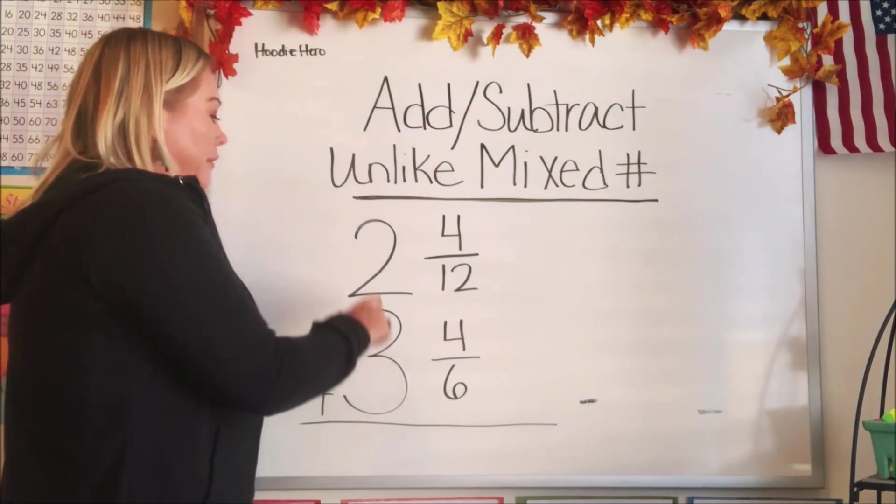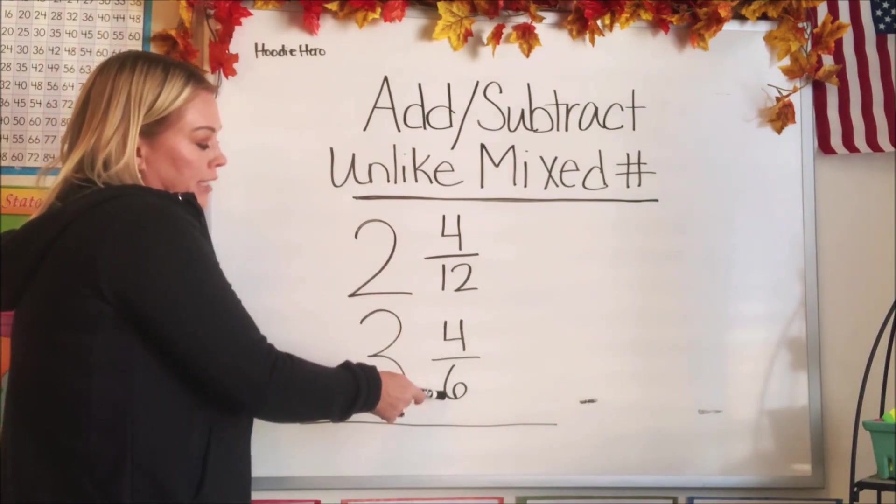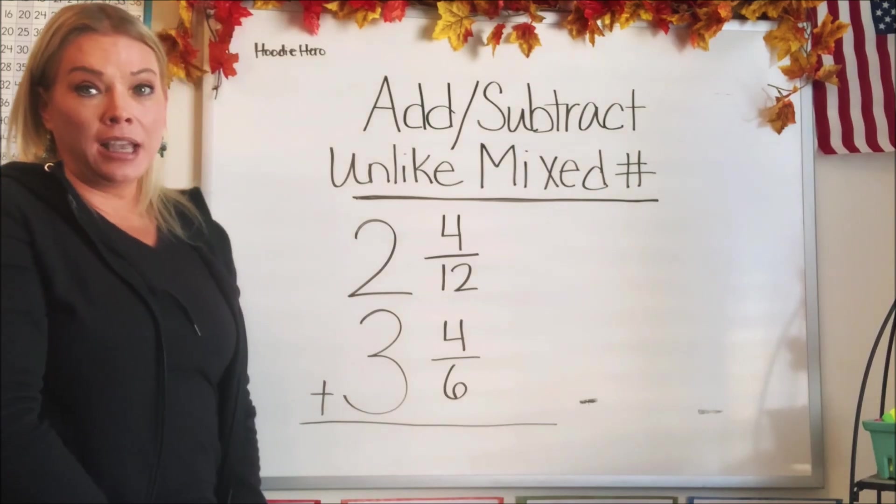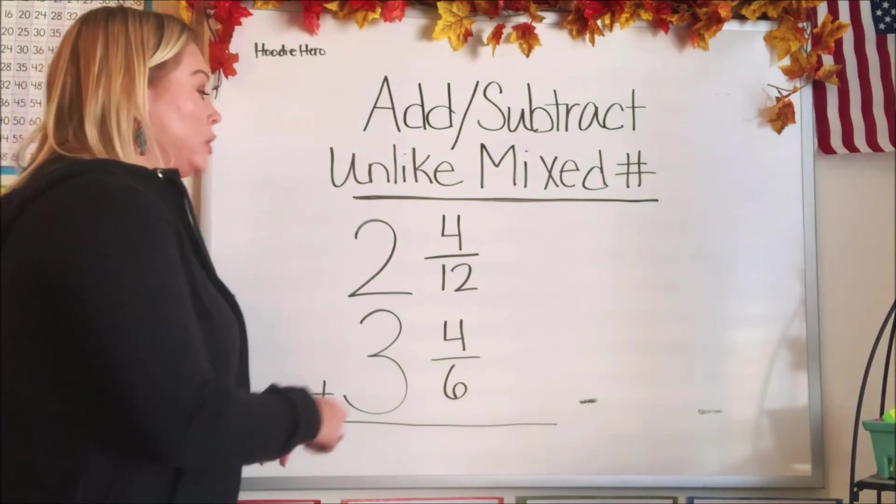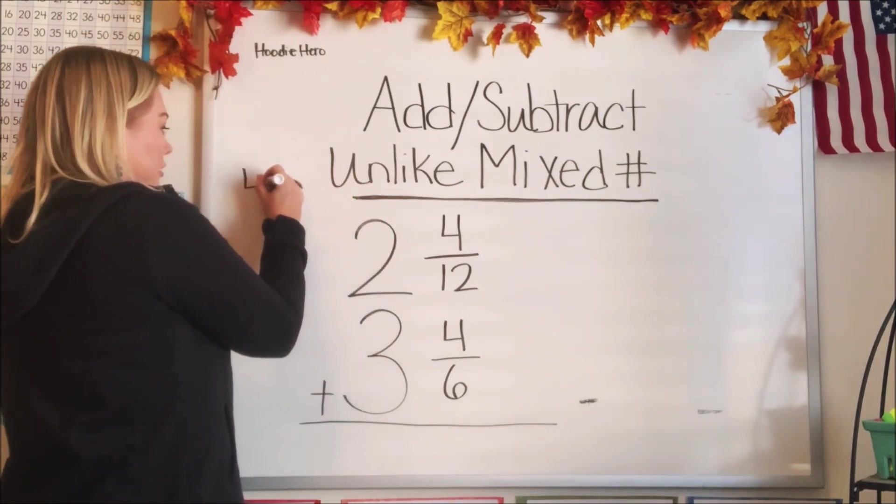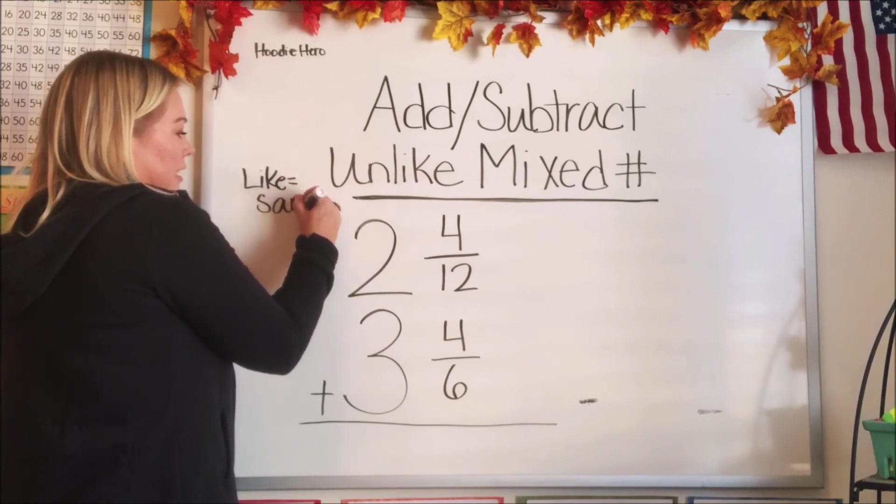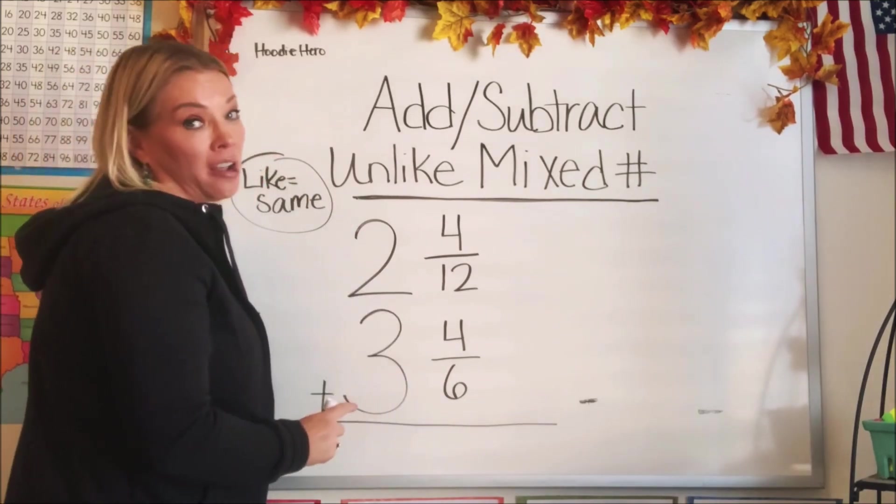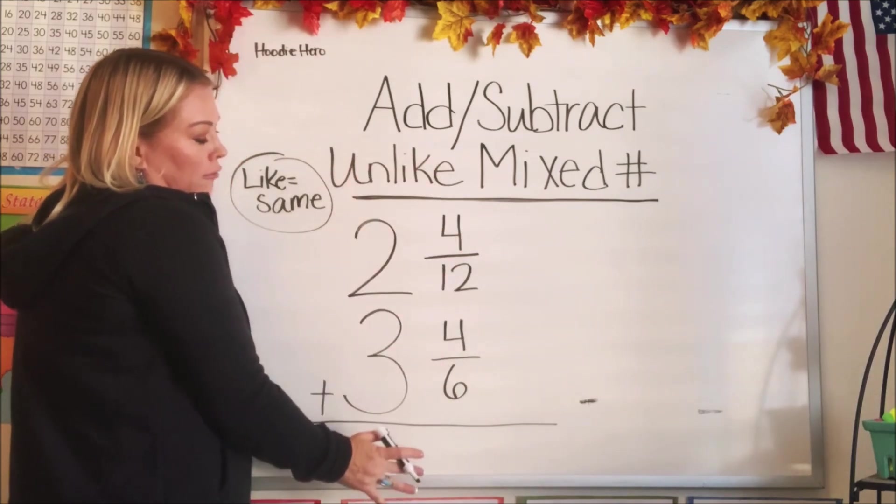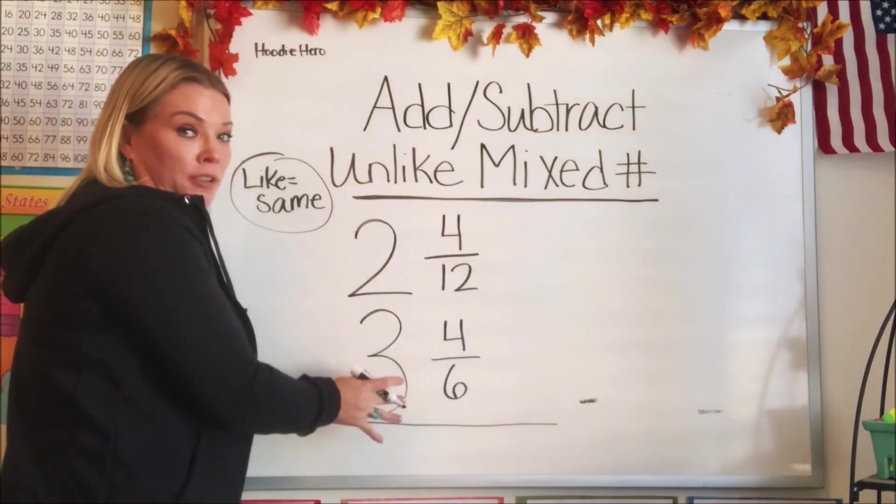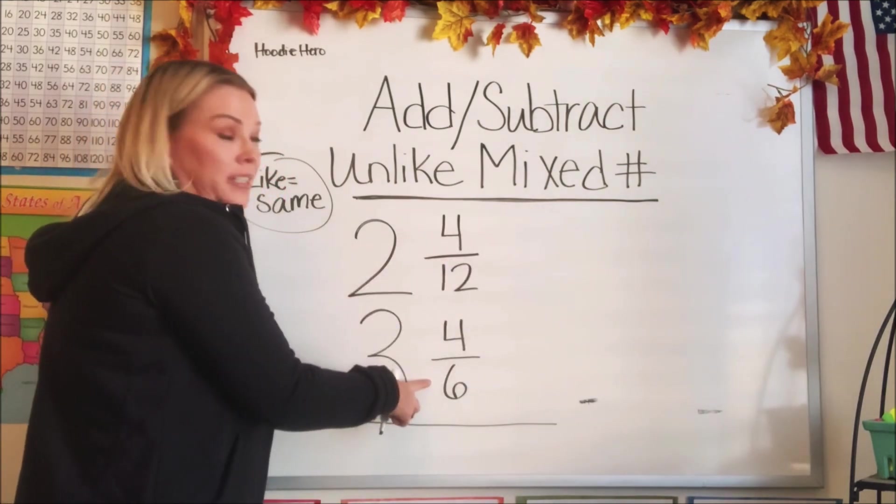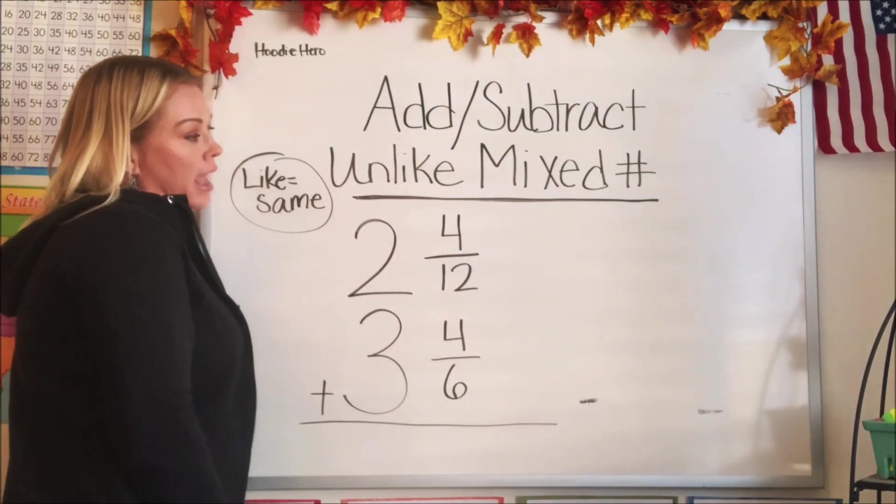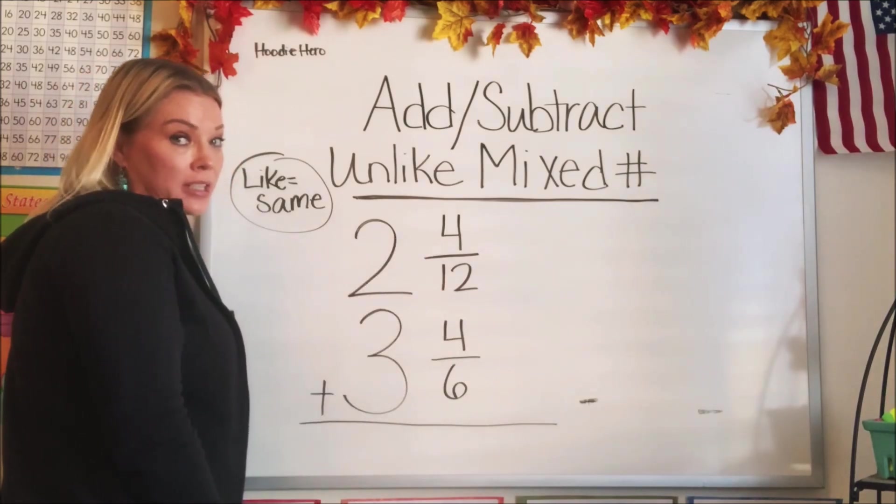Here is our first problem. We have 2 and 4/12 plus 3 and 4/6. Now we know from previous videos that we cannot add or subtract a fraction unless they have like denominators, which means the same. So like just means the same. So unlike would mean not the same. 12 and 6 are not the same. So we always go ahead and set these types of problems up. We stack them on top of each other because we need to create new fractions that have the same denominators so that we can compute or add and subtract. It's easier to see our work and not to miss a step if we stack the mixed numbers on top of each other.